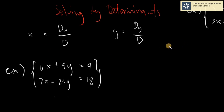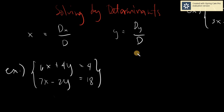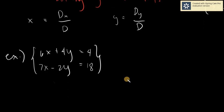We have to remember these two things when it comes to solving determinants. First, your x would be D sub x over D, and your y would be D sub y over D. You will be looking for three terms: what is D sub x, what is D sub y, and what is D. The very first thing you need to solve would be D, the value of D.